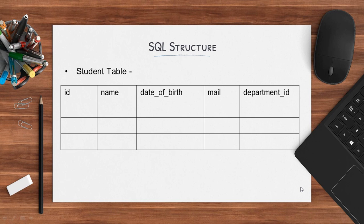Here is the SQL structure for the student table. We have an ID column that is basically the primary key, name, date of birth, male, and department ID. This department ID is referring to the department table, so department ID is a foreign key referring to the department table. Now let's understand MongoDB terms by taking the reference of SQL terms.